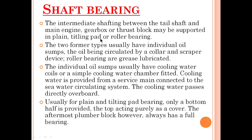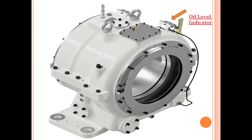If the plain and tilting pad bearings are fitted on an intermediate shaft, in that case they will have their own individual oil sump for cooling and circulation purposes. This is a type of plain bearing having an oil cooling method and an oil level indicator. The oil is circulated around the plain bearing, which is being cooled by sea water or fresh water depending upon the system.